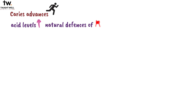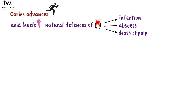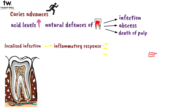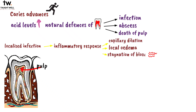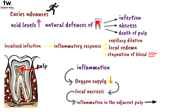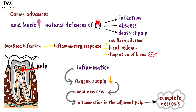When caries is rapidly advancing with very high acid levels, the natural defenses of the pulp are overwhelmed, leading to infection, abscess, and ultimately death of the pulp. Localized infection in the pulp produces an inflammatory response consisting of capillary dilation, local edema, and stagnation of blood flow. As the pulp is confined in the pulp chamber with blood supply through narrow root canals, this inflammation causes reduction of oxygen, leading to local necrosis, which triggers a vicious cycle resulting in necrosis of the entire pulp.